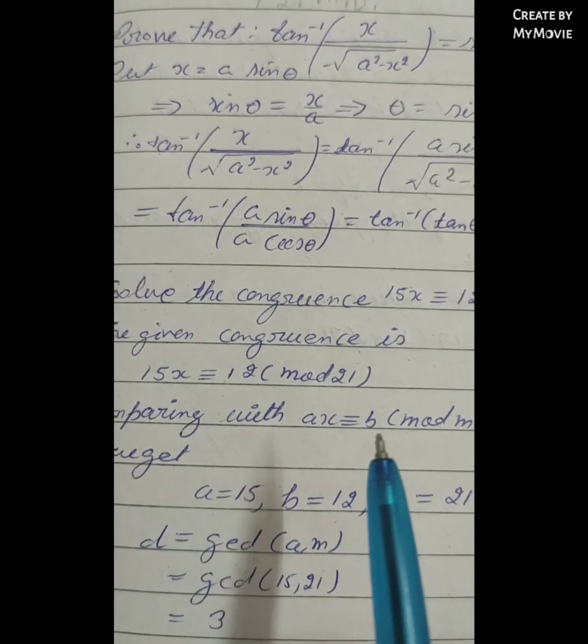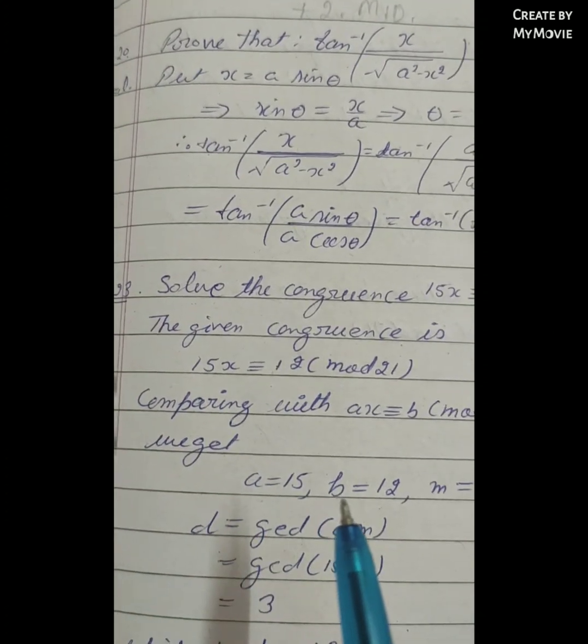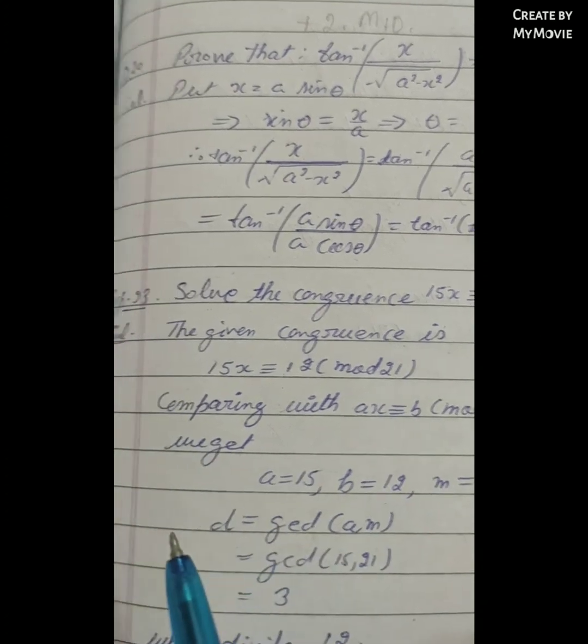Comparing with ax ≡ b (mod m), we get a = 15, b = 12, and m = 21.